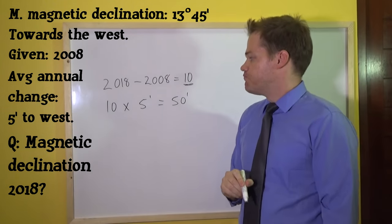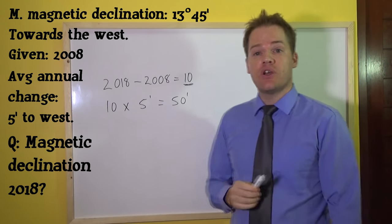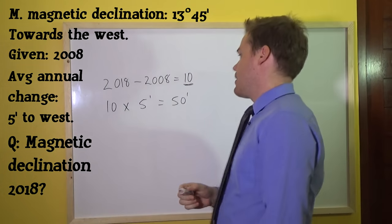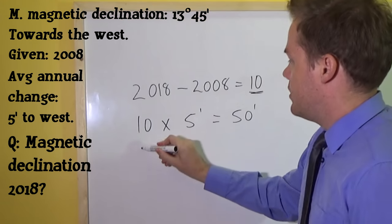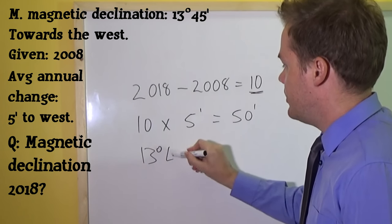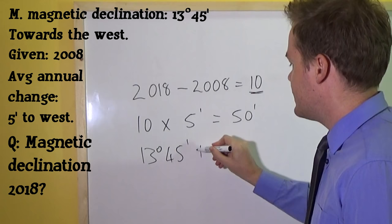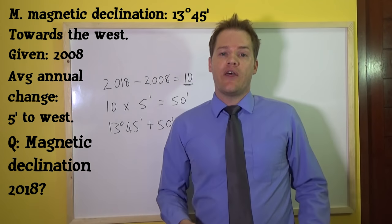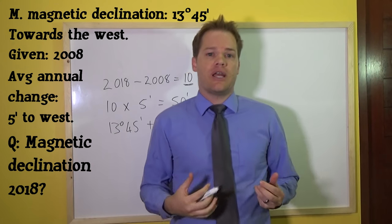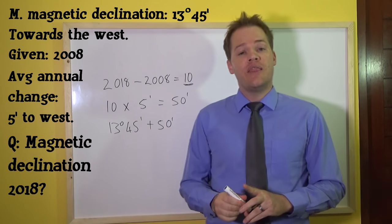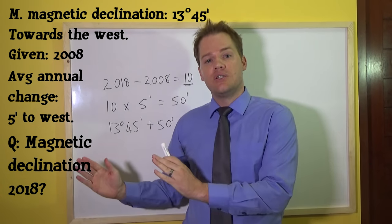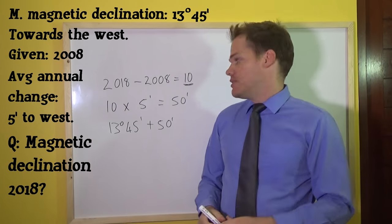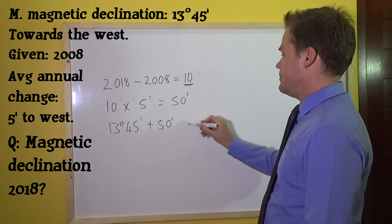Now we want to add this total to the mean magnetic declination: 13 degrees 45 minutes plus 50 minutes. How do we know whether to add or subtract? When the declination is towards the west, you always add; when it's to the east, you always subtract. Please remember that.